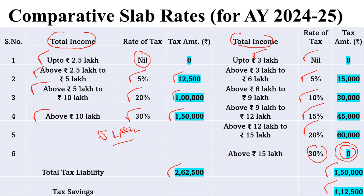This bare comparison shows the new regime saves 1,12,500 in tax, which seems to indicate the new regime is more beneficial — but that is not the case, because the total income computation under the old regime compared to the new regime is a totally different perspective. One has to understand how total income is calculated under each regime before applying the slab rate to compute the final tax liability.